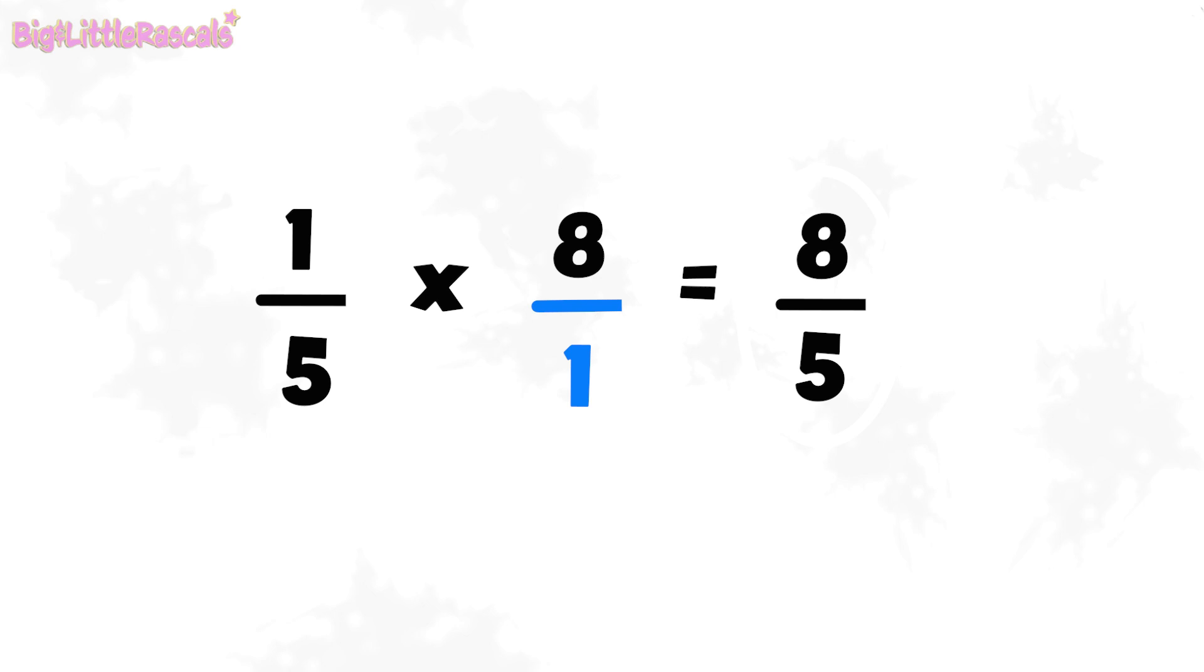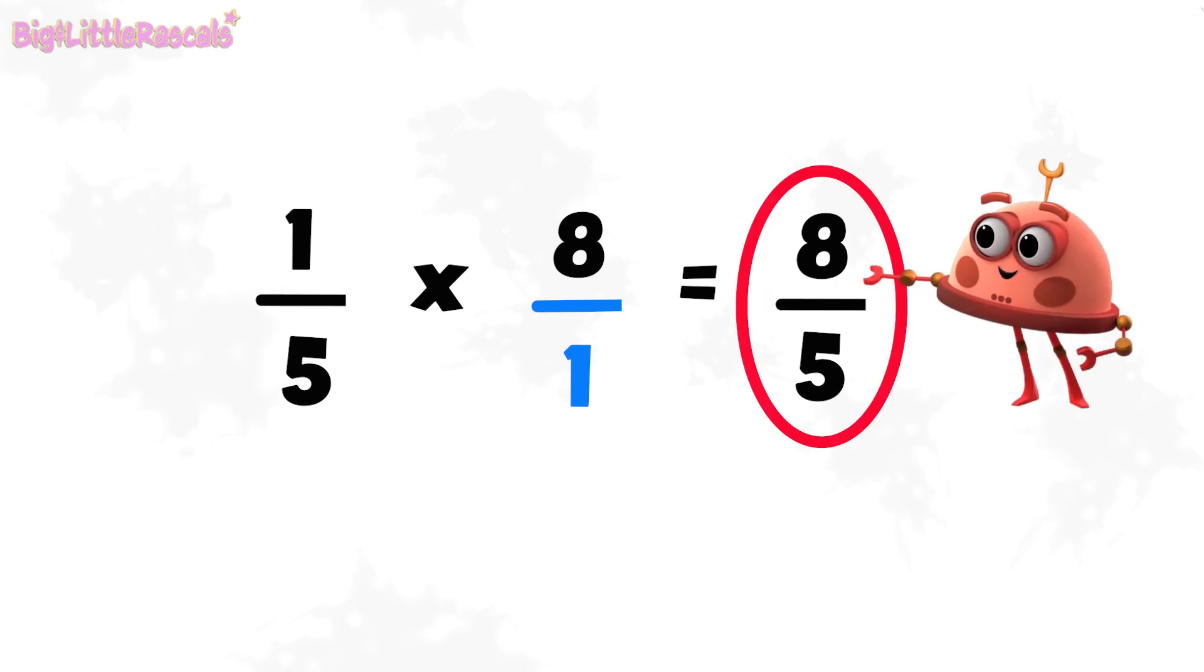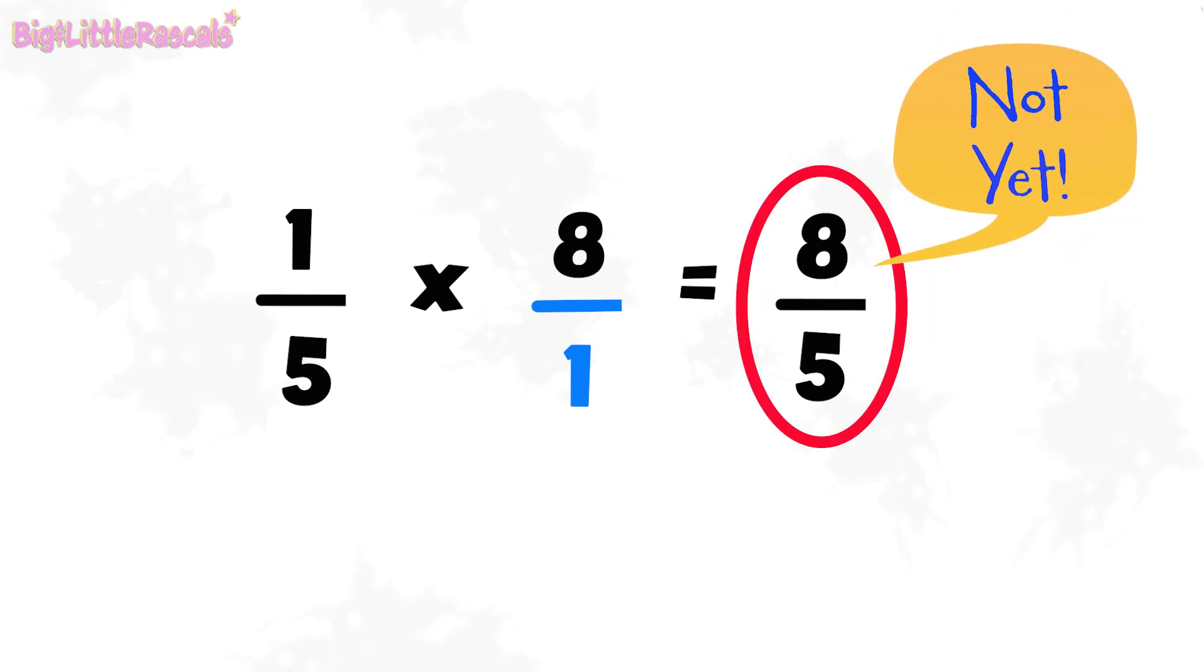Eight out of five. Or, we can say eight divided by five. Is that done? Not yet! We want to see mixed numbers, remember? The result is in fraction.